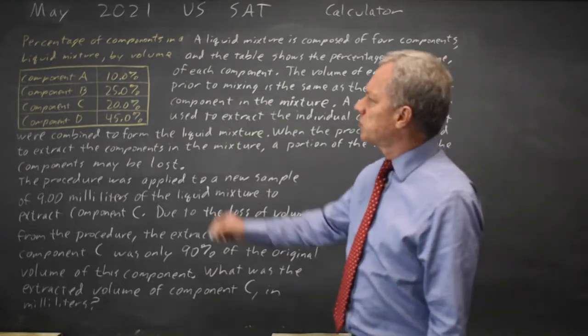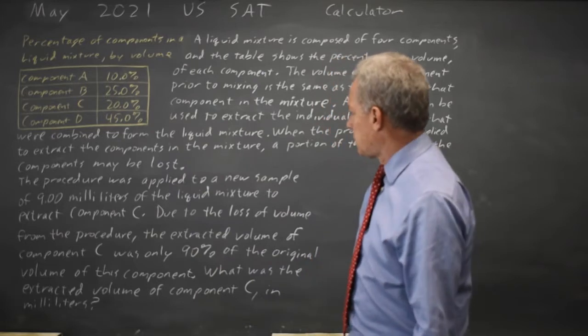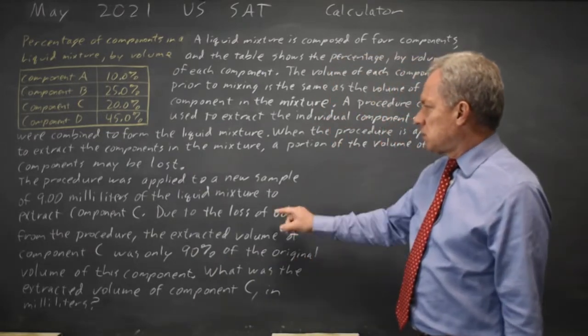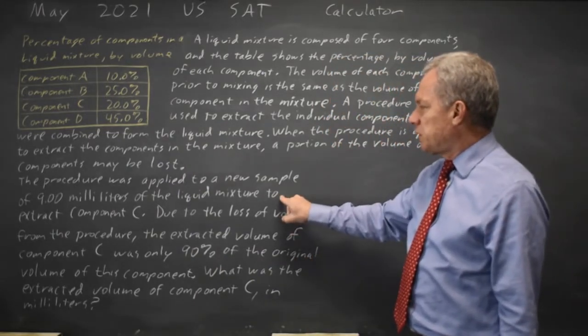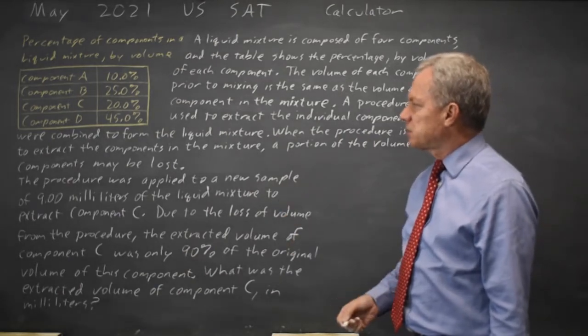College Board gives us a mixture with these proportions of each component and we have a sample with 9 milliliters and we're looking at component C.